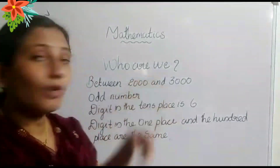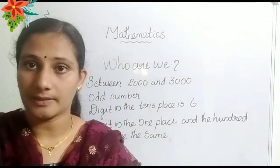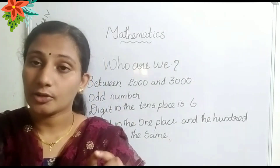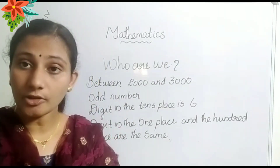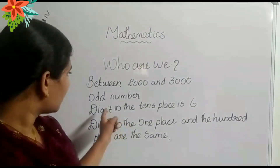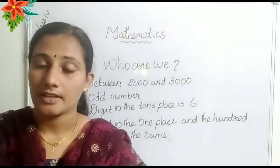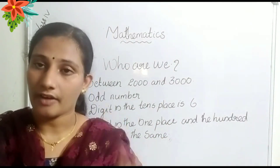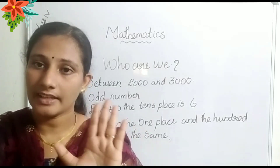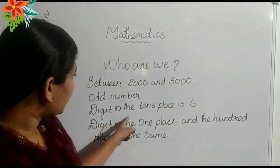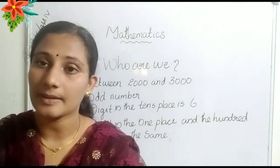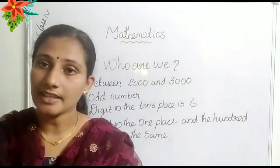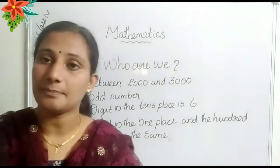Next, let us find who we are. Here, between 2000 and 3000, we are an odd number. Odd number means the last digit is 1, 3, 5, 7, or 9. This is the last digit. And the digit in the 10th place is 6.